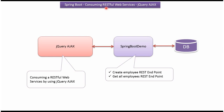In this video tutorial, I will explain how to consume RESTful Web Services using jQuery Ajax. Here you can see the DB — in this example, I am going to use MySQL DB. And here you can see the Spring Boot Demo Application, which is a Spring Boot Application. It exposes REST endpoints for creating an Employee Record and getting all Employee Records. And here you can see jQuery Ajax — using that, we will see how to consume RESTful Web Services.